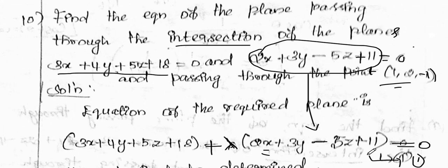So this is the problem: the intersection of two planes passing through one point. The method is P1 + lambda × P2 = 0. Substitute the point to find the constant lambda, then substitute lambda back into the equation.